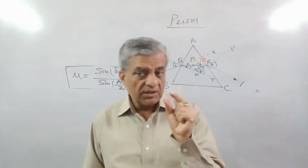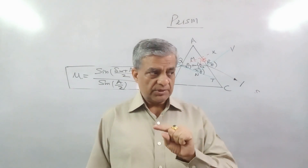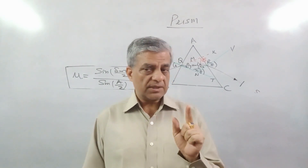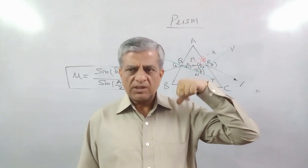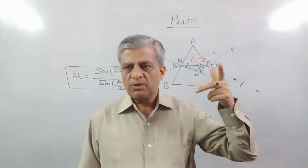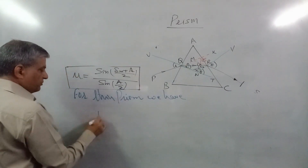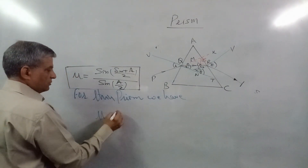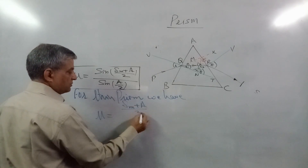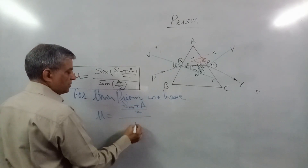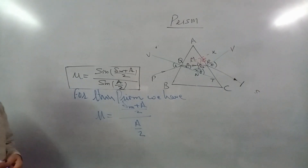So, for thin prisms — what does thin prism mean? A is small, and δ will also be small. For a thin prism, we have μ equal to (δ + A/2) divided by (A/2).